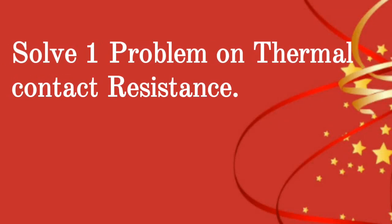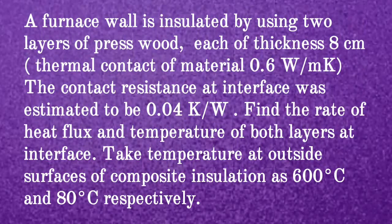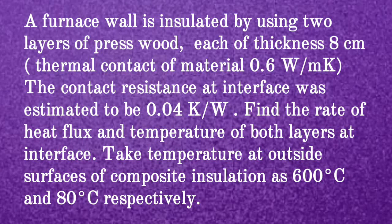We will solve one problem on thermal contact resistance. A furnace wall is insulated by using two layers of press wood, each of thickness 8 cm. The thermal conductivity of the material is 0.6 Watt per meter Kelvin. The contact resistance at the interface was estimated to be 0.04 Kelvin per Watt. Find the rate of heat flux and the temperature of both layers at the interface. The temperature of the outside surfaces of the composite insulation are 600 degree Celsius and 80 degree Celsius respectively.